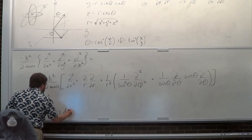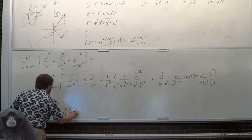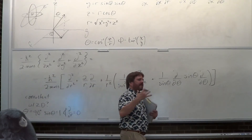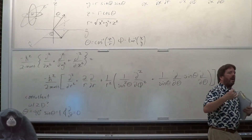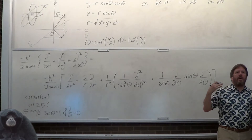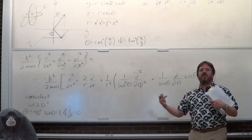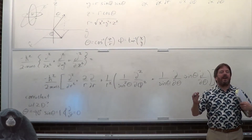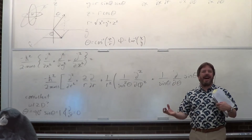And if it's a rigid rotor, all the d/dR terms will be zero — or rather, the radial wave function is just a constant, because there's no information to be had.